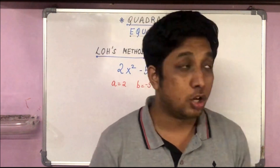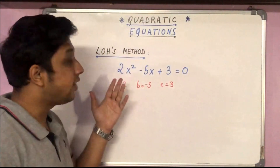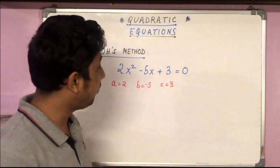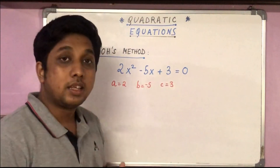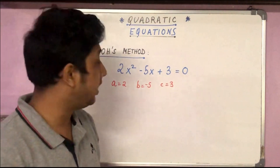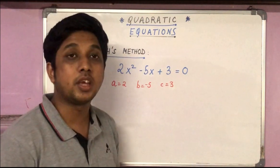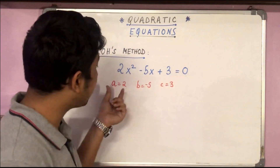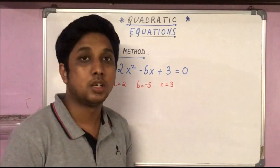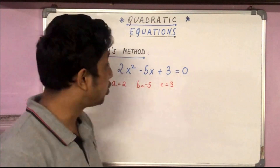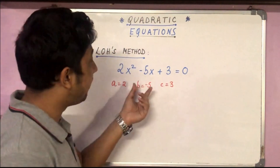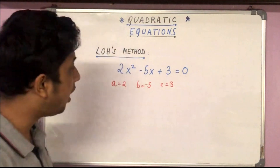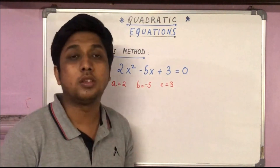It's called Lowe's method. Let's say we have an equation: 2x² − 5x + 3 = 0. The standard form of a quadratic equation is ax² + bx + c = 0. Comparing, we get: a = 2, b = −5, c = 3.